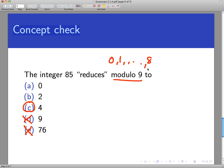That is certainly in the range 0 through 8. Is 85 actually congruent to 4 mod 9? Well, yeah, it is, because 9 divides the difference between 85 and 4. 85 minus 4, of course, is 81, and 9 certainly divides that.